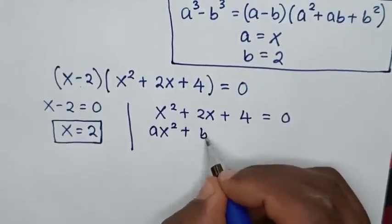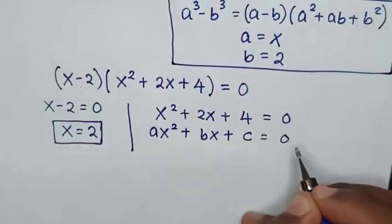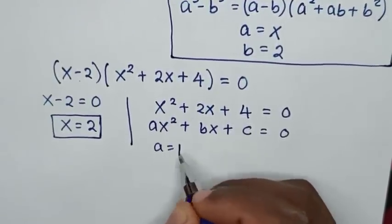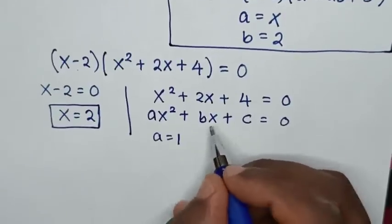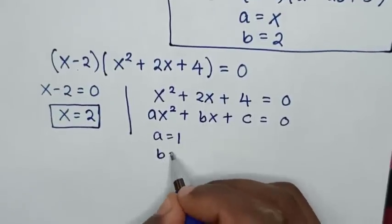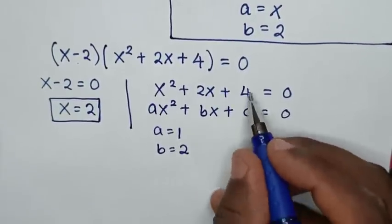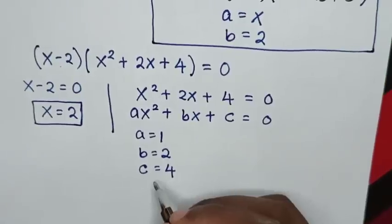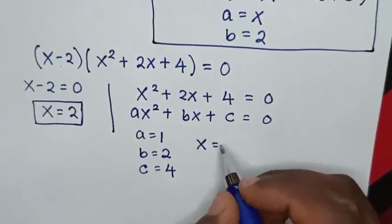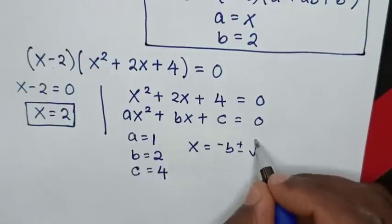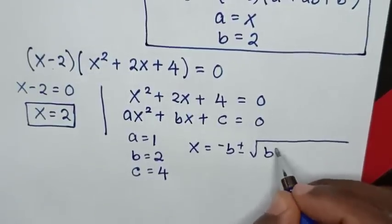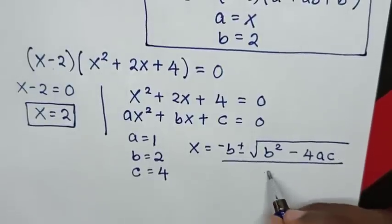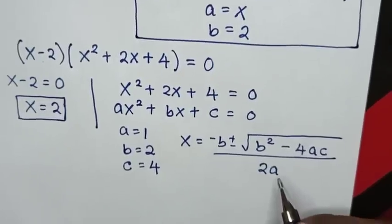Now to solve the quadratic equation x² + 2x + 4 = 0, which is in the form ax² + bx + c = 0, we compare to find a = 1, b = 2, and c = 4. We use the quadratic formula: x = (-b ± √(b² - 4ac)) / 2a.